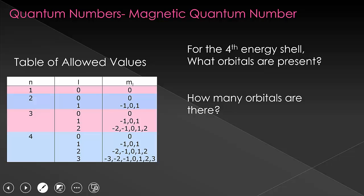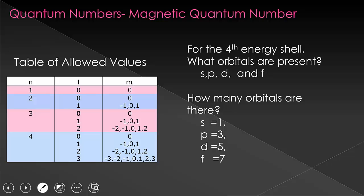Since we know there are S, P, D, and F orbitals — or stated differently, L equals zero, one, two, and three — we can count how many of each orbital exists. When L equals zero, M sub L is only allowed to equal zero, so there's just one S orbital. When L equals one, M sub L is allowed to equal negative one, zero, and one, giving us three P orbitals. When L equals two, M sub L goes from negative two to two, giving us five D orbitals. When L equals three, M sub L goes from negative three to positive three, giving us seven F orbitals. Adding these up, we get a total of 16 orbitals.